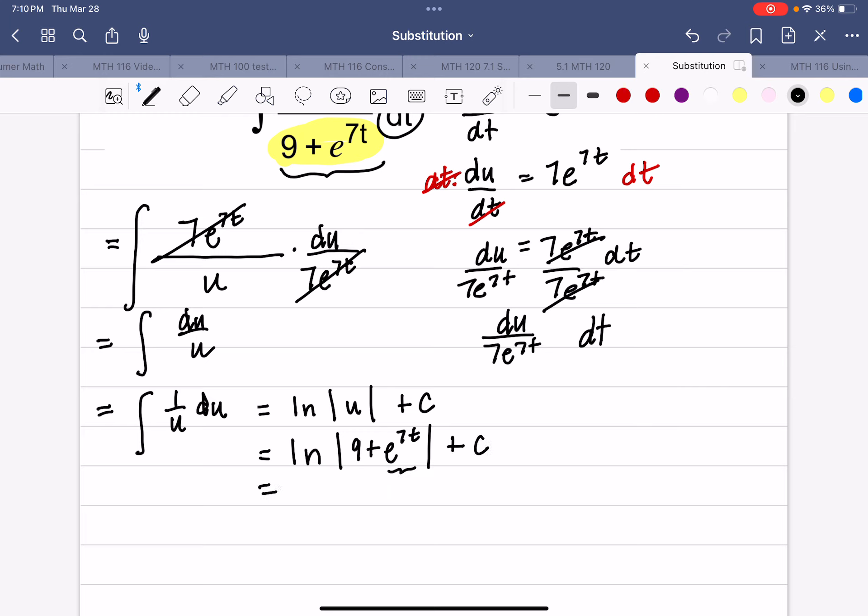Now this is always positive, and this is always positive. So here's another one where I don't have to have the absolute value bars. Because that is definitely always positive. So it's the natural log of 9 plus e^(7t) plus c.